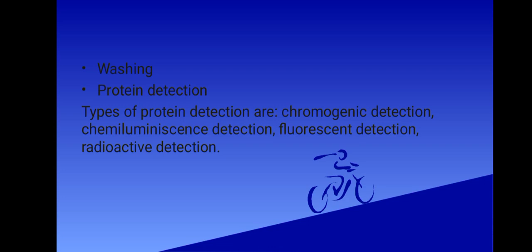In the chemiluminescence method or detection, a reaction mixture containing a substrate is added to the membrane. The enzyme attached to the antibody catalyzes a reaction that emits light and is detected by an X-ray film. In the chromogenic method, a chromogenic substrate is used as a detection reagent. Examples of these are TMB and DAB (diaminobenzidine), which are commonly used as substrates of HRP.